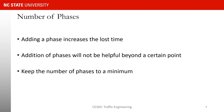Each phase is associated with some lost time, so we don't want to increase the number of phases unnecessarily because adding new phases introduces a lot of lost time. At the same time, for certain left turn movements or other movements we need to have a protected phase to make sure they can go through the intersection. So the objective of a traffic engineer is to use the minimum number of phases that provides enough opportunity for all movements to go through the intersection.